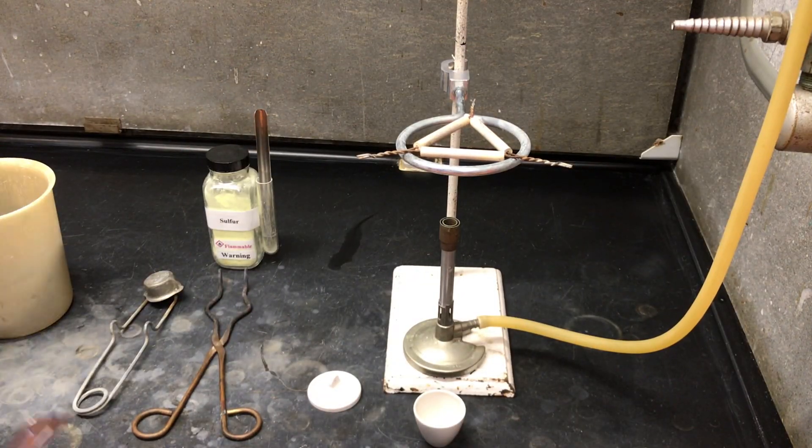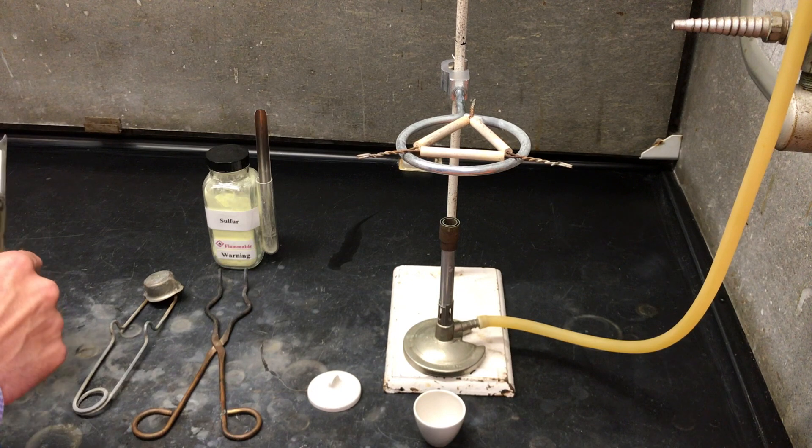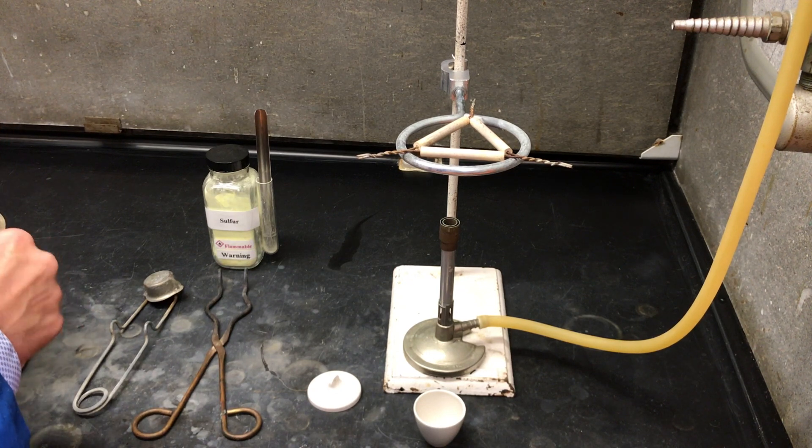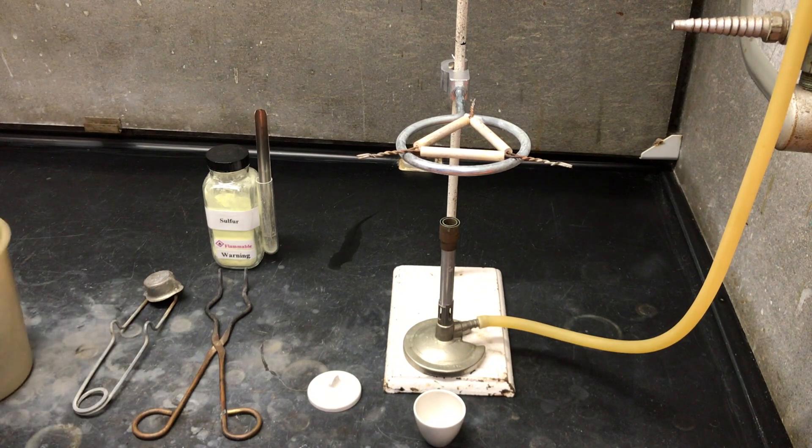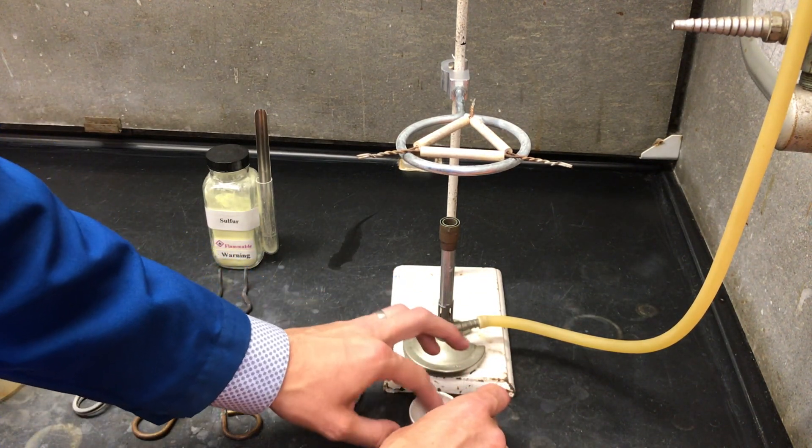This reaction we're going to be using steel wool as iron and heating it in a crucible with elemental solid sulfur. This reaction will be done in the hood as the compounds produced are strong irritants.